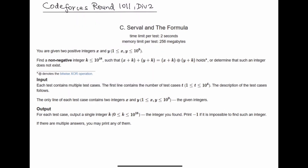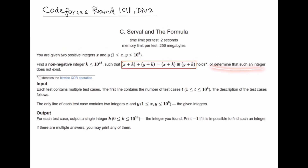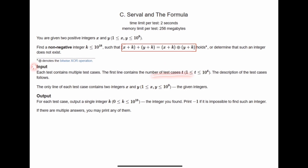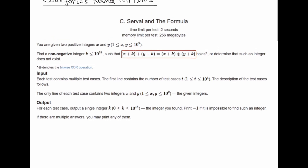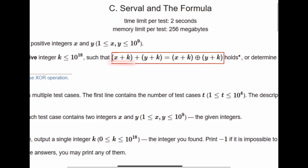We have to find a k such that this condition holds, or determine that such an integer does not exist. This is the XOR operation. The first line contains the number of test cases. Every test case will have two inputs x and y, and we have to find an integer k such that x plus k plus y plus k equals x plus k XOR y plus k.